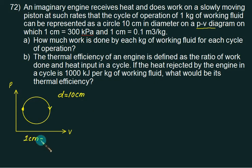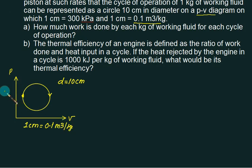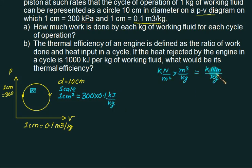What is the scale? x-axis scale, 1 cm equals to v is 0.1 meter cube per kg. y-axis scale is 1 cm equals to 300 kPa. If you take a square of 1 cm by 1 cm size, the area of this 1 cm square is 300 kPa times 0.1 meter cube per kg. Scale stands for 1 cm square. 300 kPa multiplied by 0.1 is 30 kilojoules per kg.